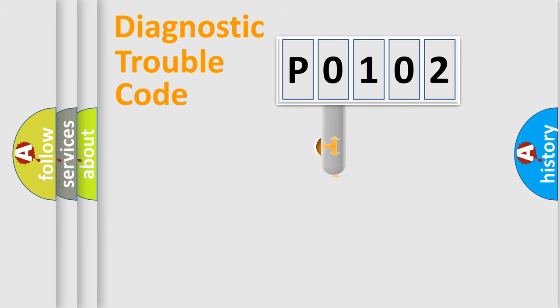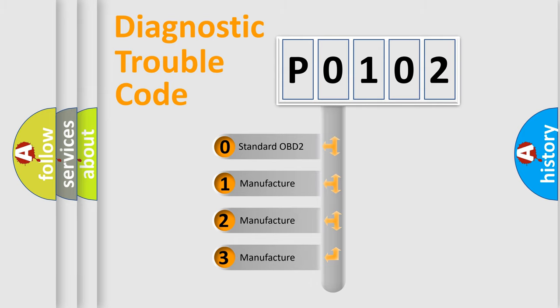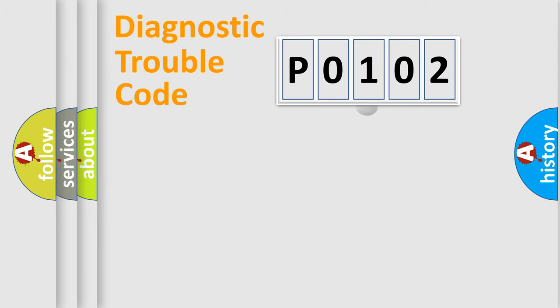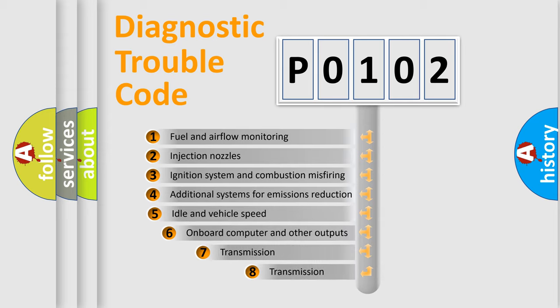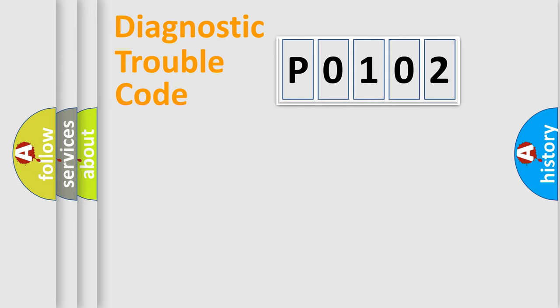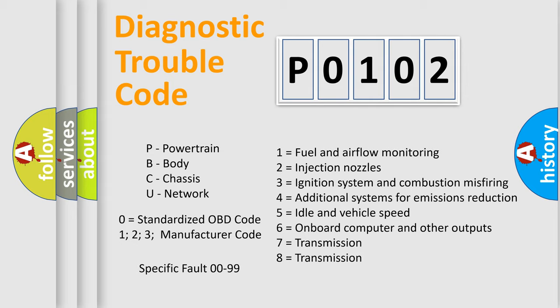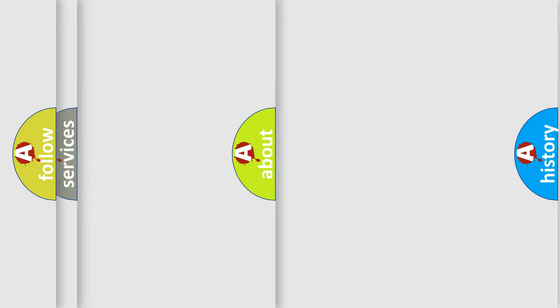This distribution is defined in the first character code. If the second character is expressed as zero, it is a standardized error. In the case of numbers 1, 2, or 3, it is a car-specific error. The third character specifies a subset of errors. The distribution shown is valid only for the standardized DTC code. Only the last two characters define the specific fault of the group. Let's not forget that such a division is valid only if the second character code is expressed by the number zero.